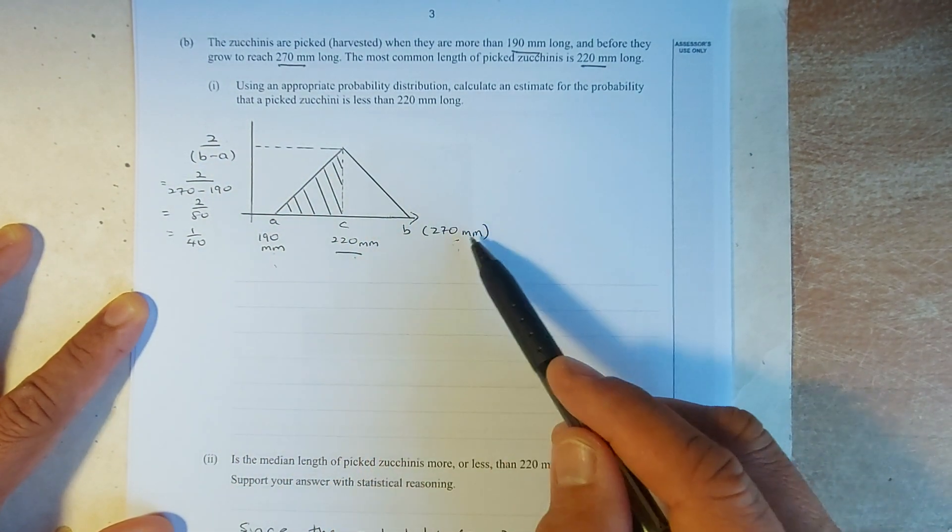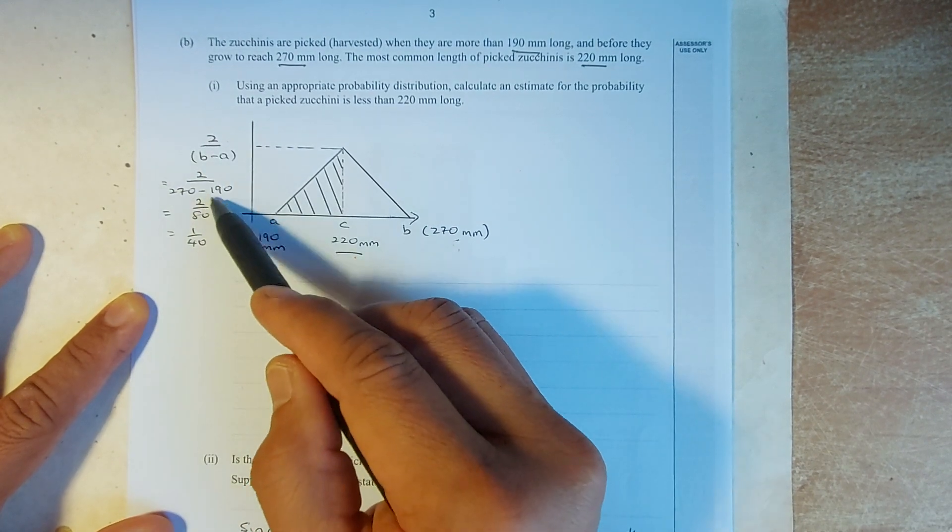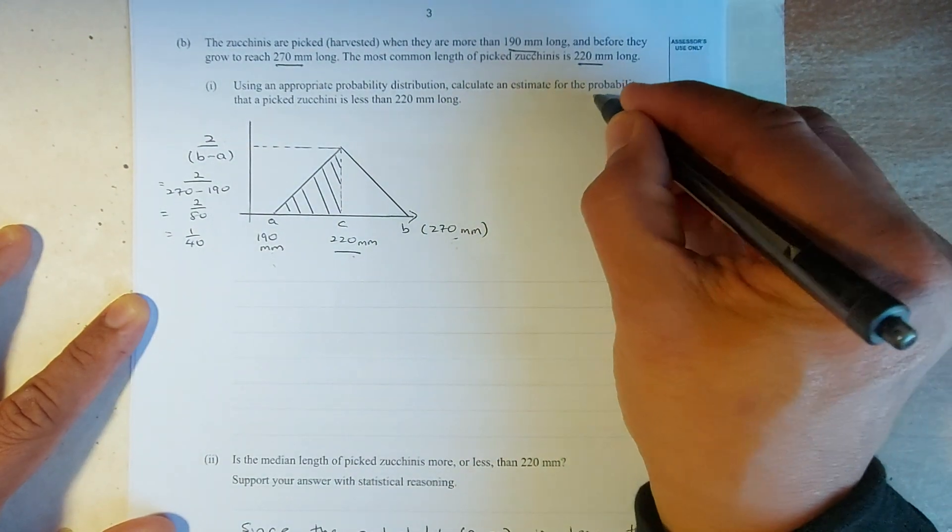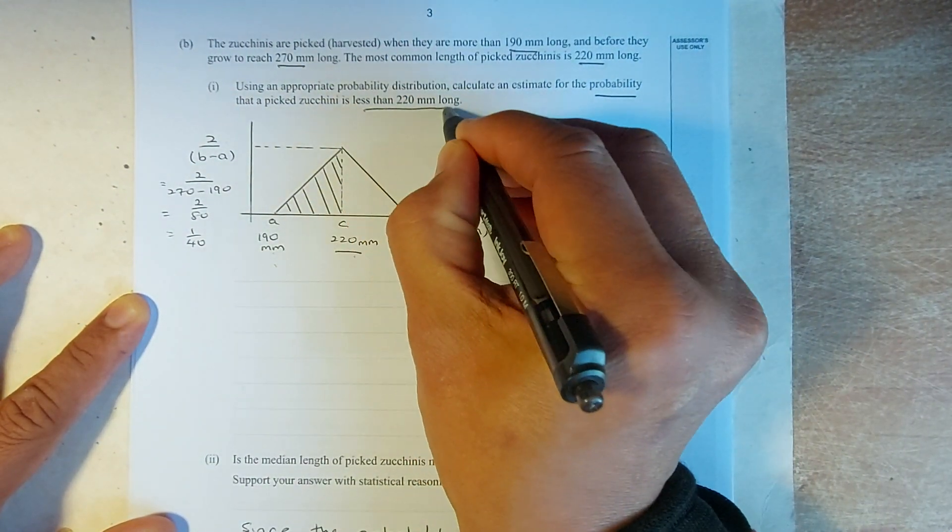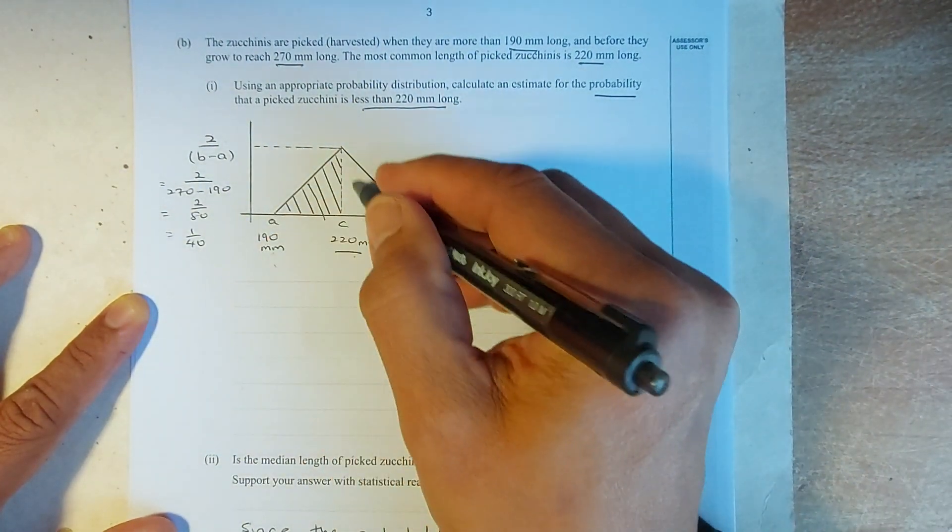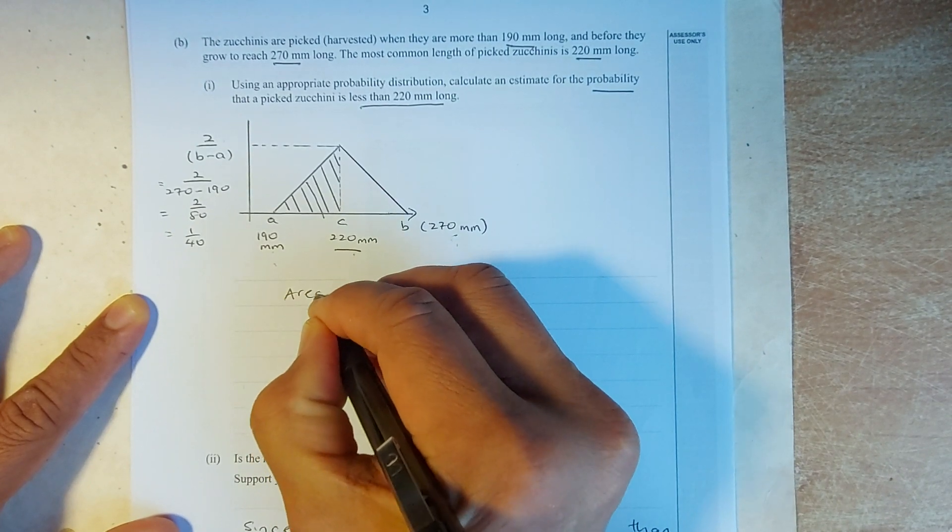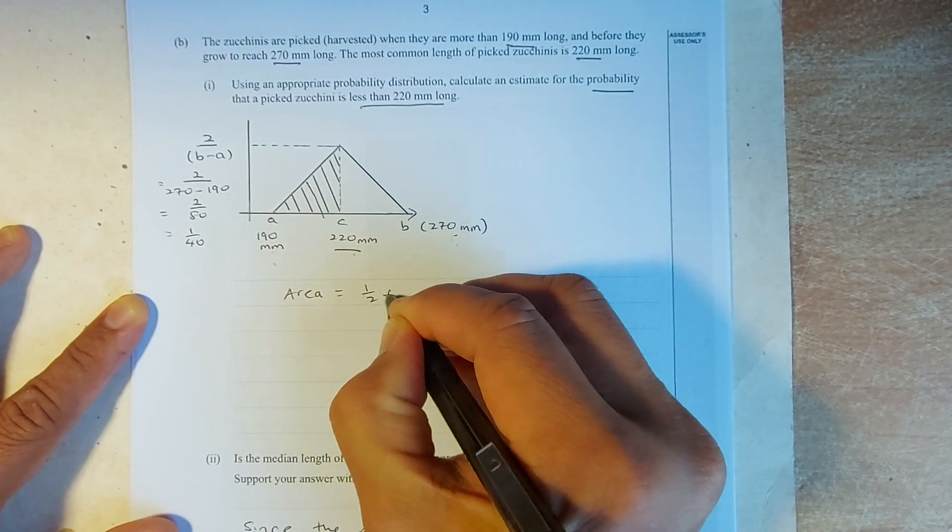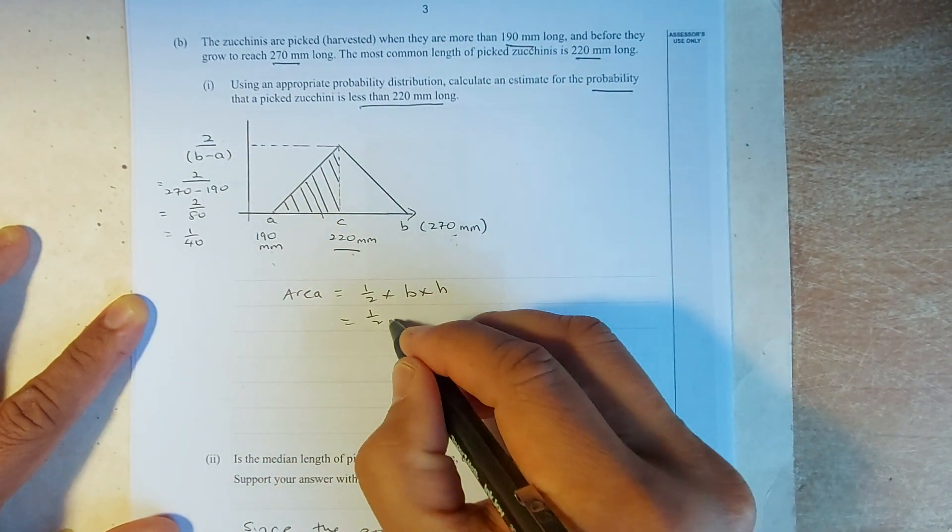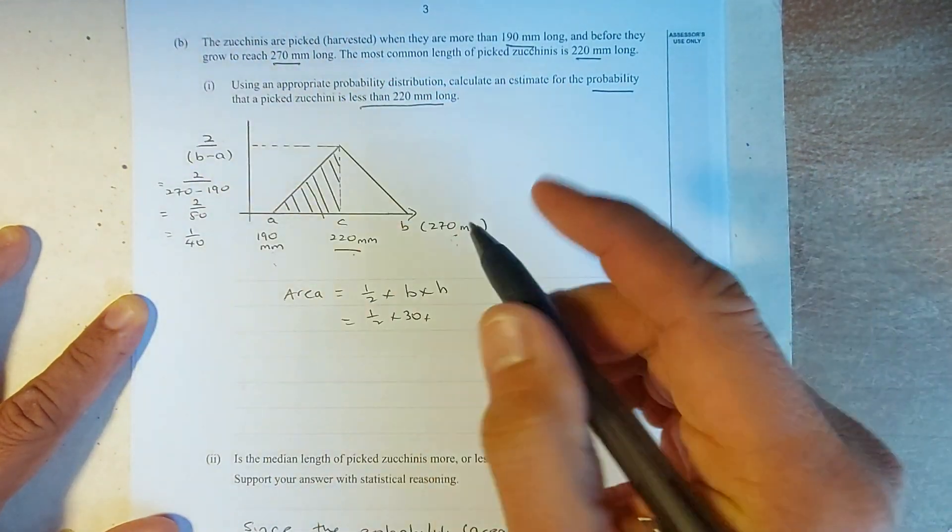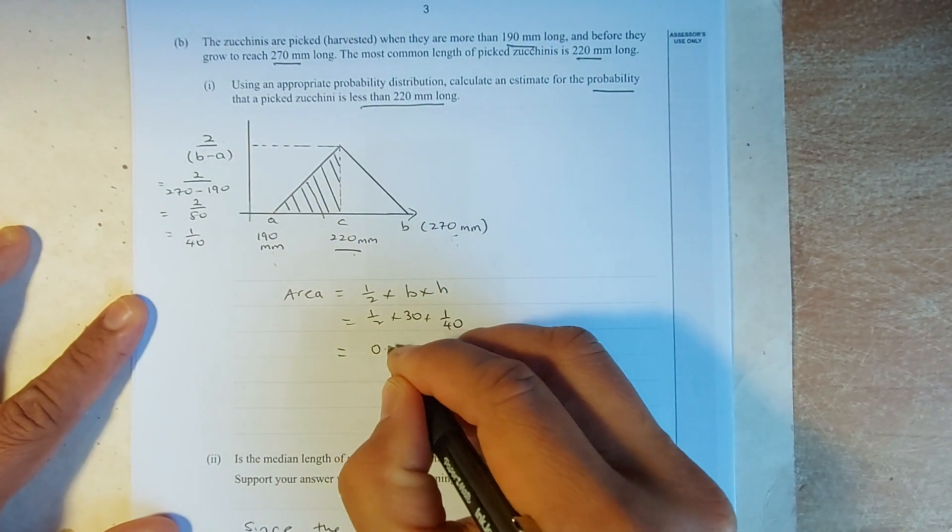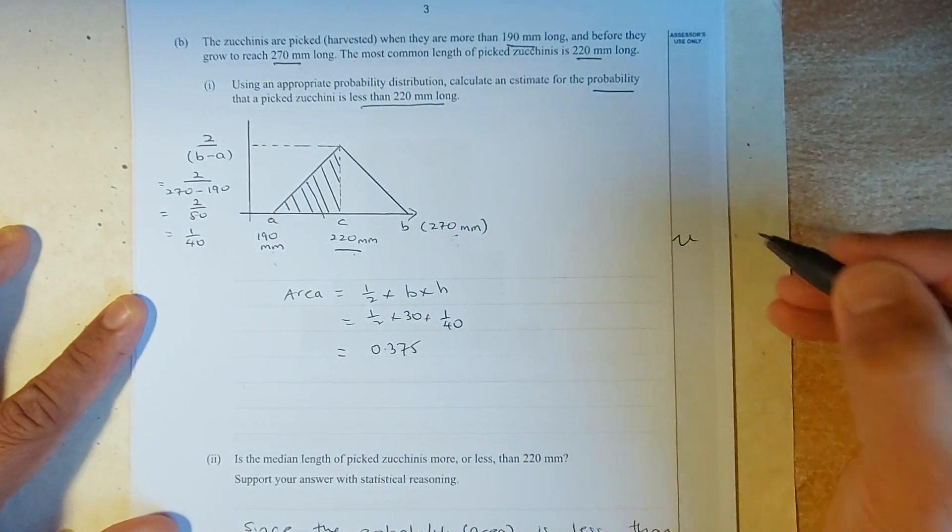So, this is your B. This is your A. So, 270 minus 190 is going to be 80. So, 2 divided by 80 is 1/40. So, they ask you to calculate the probability. They are calculating the area that is less than 220. So this is 220. That is the area we are looking for. So, to calculate that area, we use the area of a triangle. Area of a triangle is half times base times height. Half, the base is from here. 190 to 220 is going to be 30. And the height we found is 1 over 40.